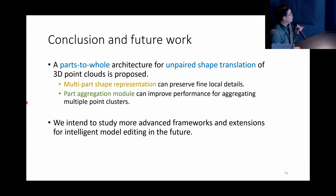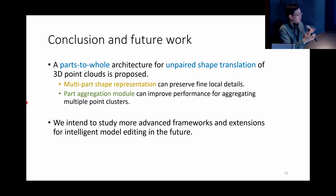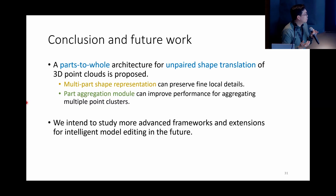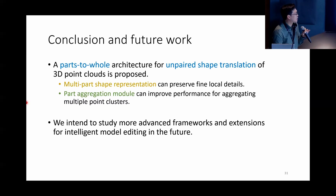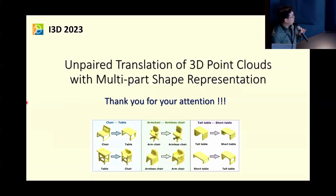In conclusion: we propose a part-to-whole architecture for unpaired shape translation. We decompose the holistic generator into smaller parts and then aggregate them, using a multi-part shape representation and a part aggregation model to improve results. In future work, we would like to study a more advanced framework and hope to extend this to intelligent model editing. We have some preliminary results but believe there is significant potential to be extended.